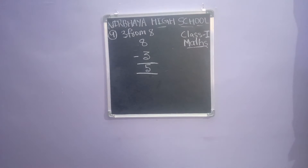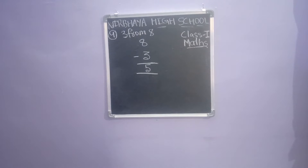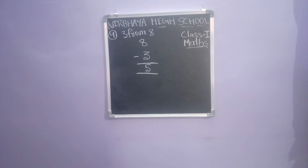Enter the sum first of all, then enter the answer. Subtract 3 from 8 by writing the number in columns. First of all enter the sum, leave the line and write down the solution.